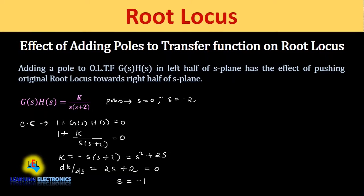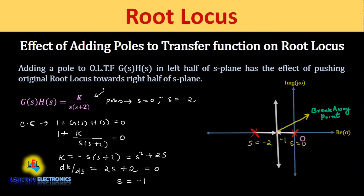This open loop transfer function has one breakaway point at S = -1. When we draw the root locus, both poles at S=0 and S=-2 approach this breakaway point and divide into two different branches. The root locus lies entirely in the left half of the S plane for this equation.